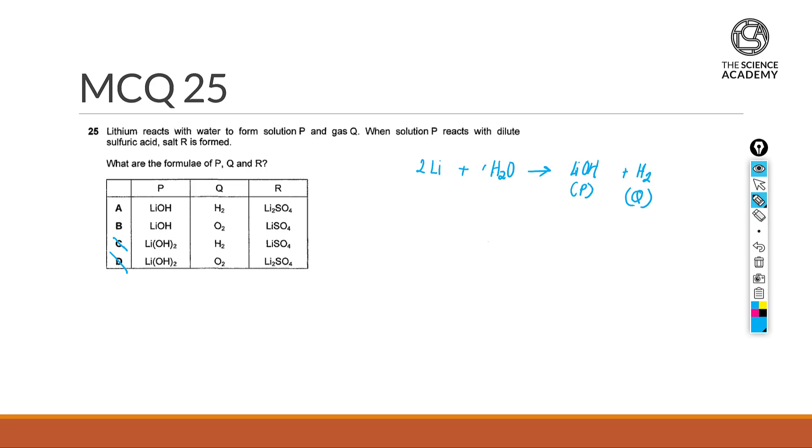Let's balance out the equation together first. When solution P here reacts with dilute sulfuric acid, salt R is being formed. So lithium hydroxide in this case reacts with sulfuric acid.